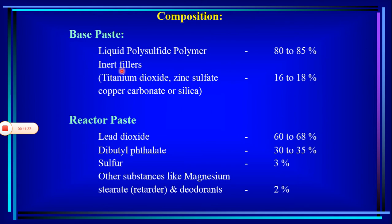Fillers are found in the composition of silicones, polyethers, and any elastomeric material you consider. The main function of fillers is to improve the working and handling characteristics, making manipulation simpler. Fillers never participate in the setting reaction, but they improve the physical and mechanical properties of the material.